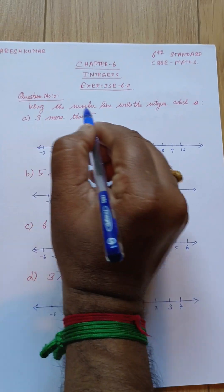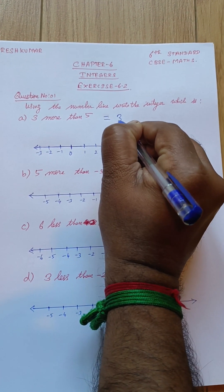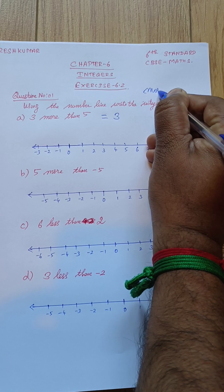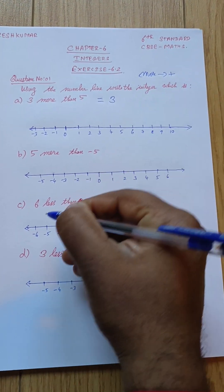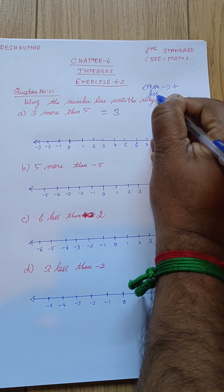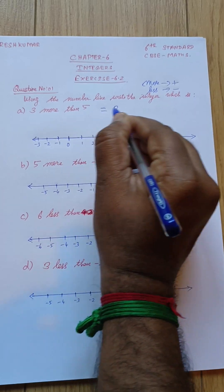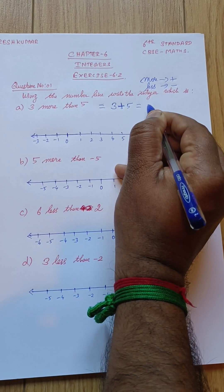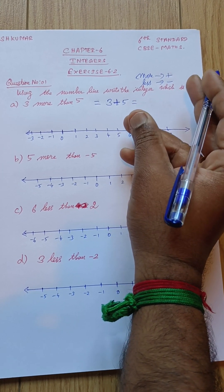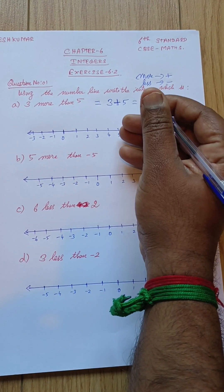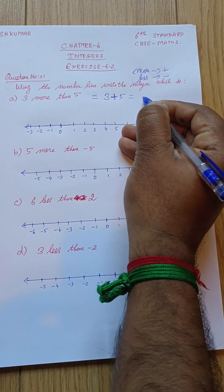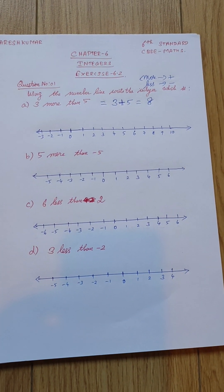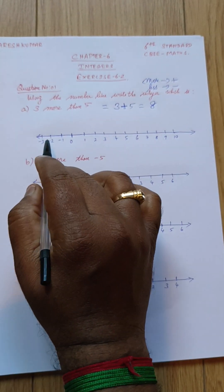First sum: three more than five. 'More than' means plus, so three more than five means five plus three. Five, six, seven, eight - so eight is the answer.